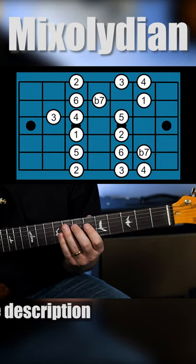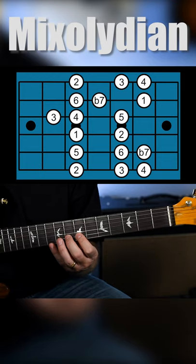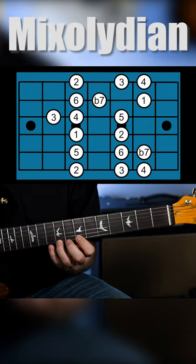Alright, so it's gonna go: 1 2 3 4 5 6 flat 7 1 2 3 4.